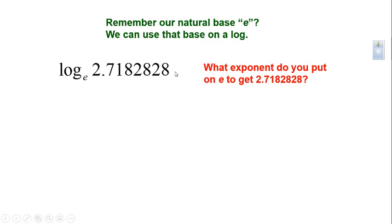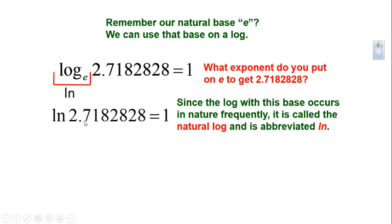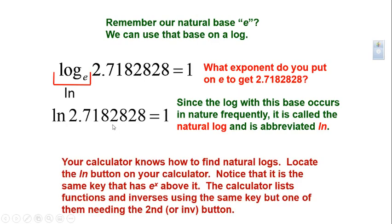The number e is approximately equal to 2.7182818. The natural logarithm is not written as 'log base e' — instead, you'll see 'ln' on a calculator, which stands for the Latin 'logarithme naturel.' Ln of e = 1. So ln of x means log base e of x. Whenever you see ln, think log base e. The input of a logarithm is called the argument.